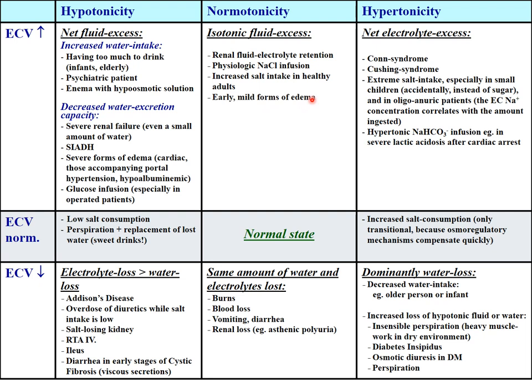Early mild forms of edema can also cause isotonic hypervolemia. Hypertonic hypervolemia can develop from endocrine problems such as Conn syndrome or Cushing syndrome, excessive salt intake especially in small children, or oliguric/anuric patients where extracellular sodium concentration rises with ingested sodium.